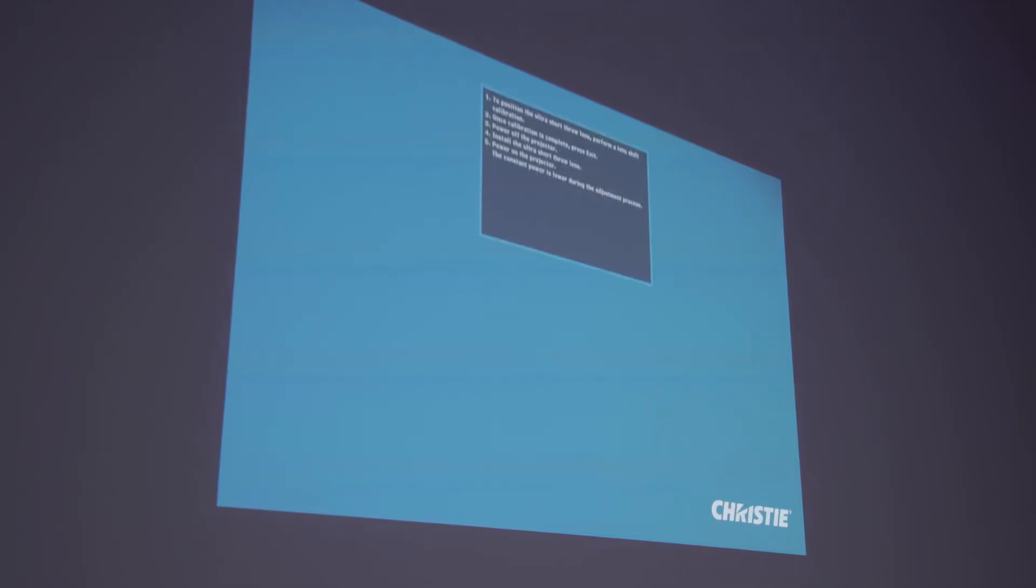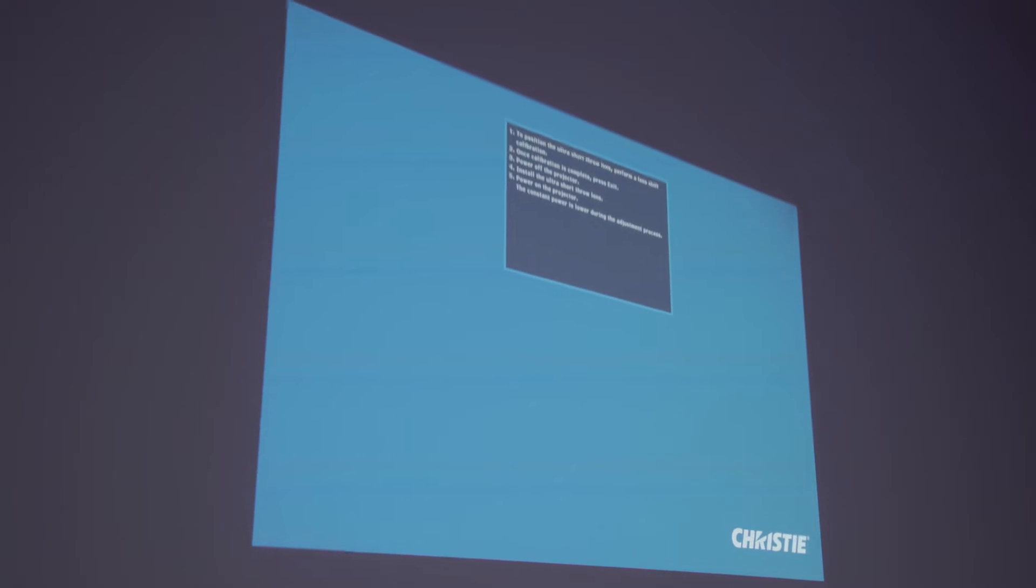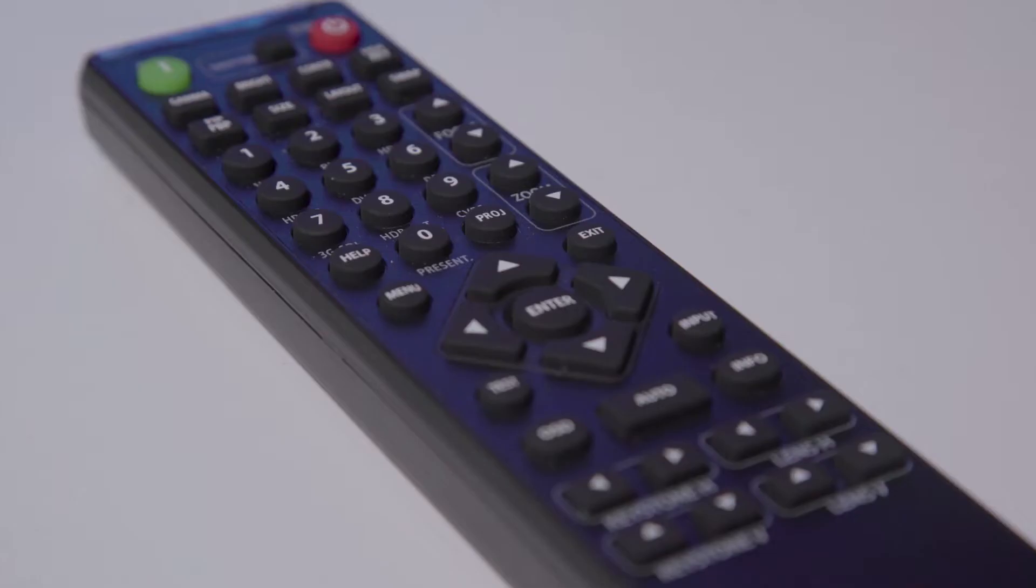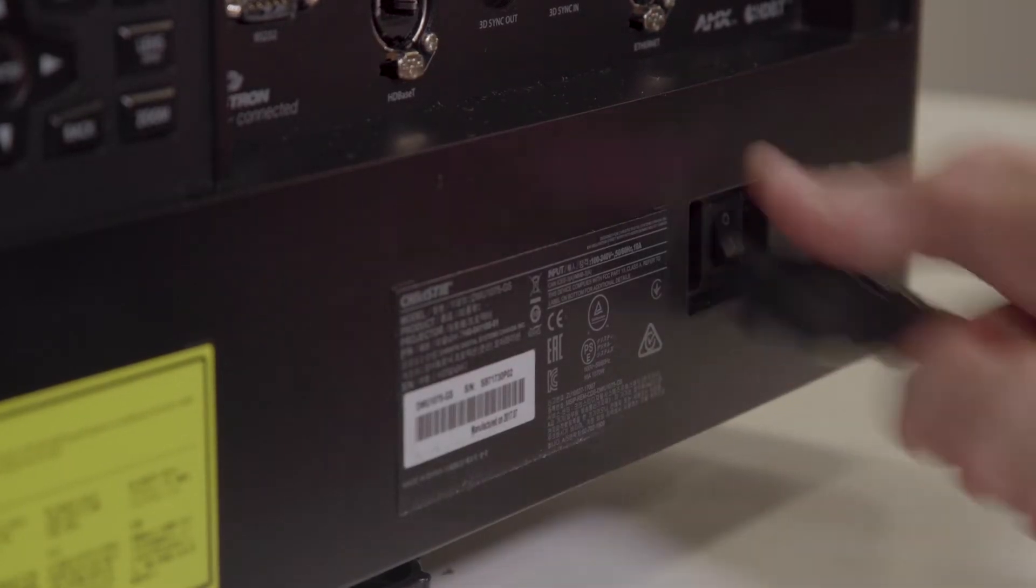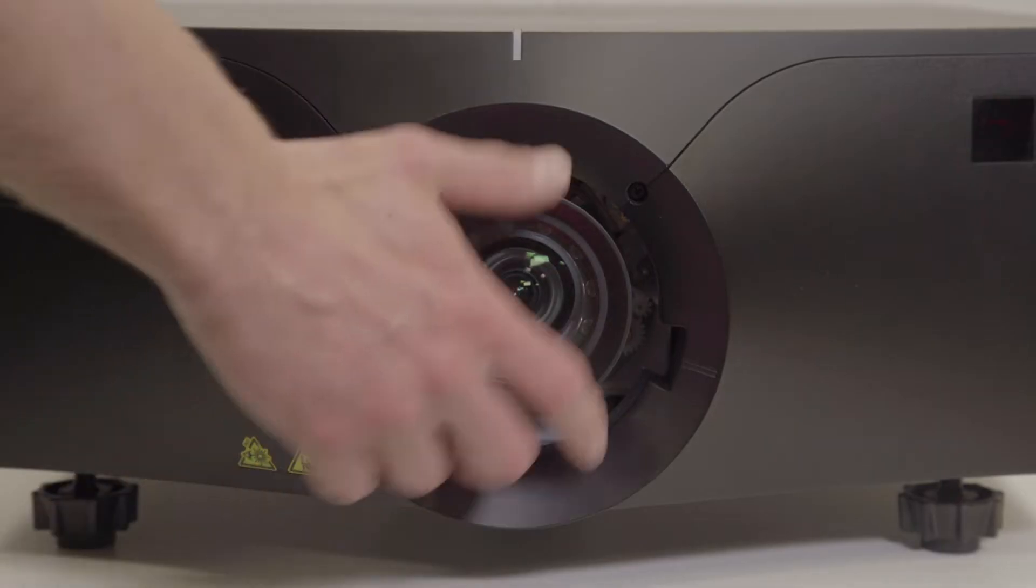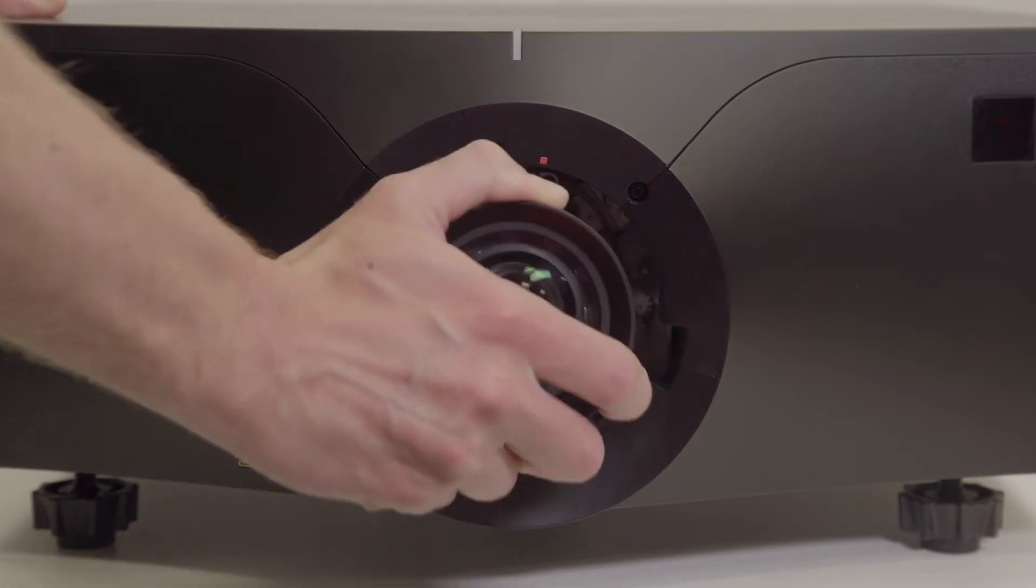A lens calibration is then performed. Once this is complete press exit on your remote and turn off the projector at the AC power. Once powered off remove the non-UST lens from the projector.